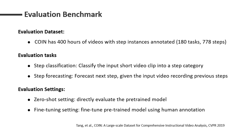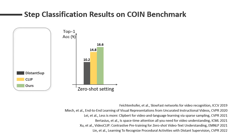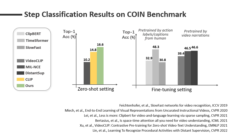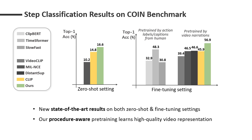In the zero-shot result of step classification, we compare with the CLIP model and the latest weak distance supervision. Our model largely outperforms these strong baselines. Further, we evaluate our model in the fine-tuning setting. The grey bars are models pre-trained by action labels or captions from human annotators, while other models are pre-trained by narrations in videos. Our model achieves new state-of-the-art results on both zero-shot and fine-tuning settings, suggesting that our procedure-aware pre-training can learn high-quality video representations.